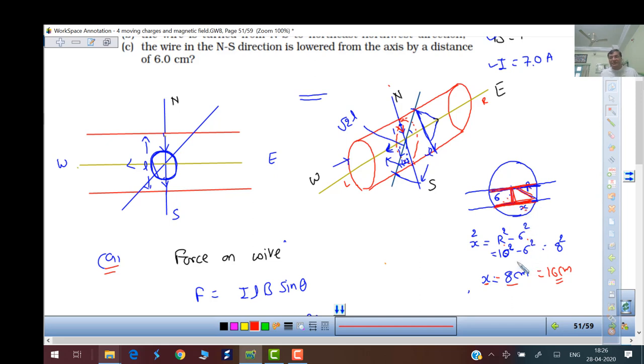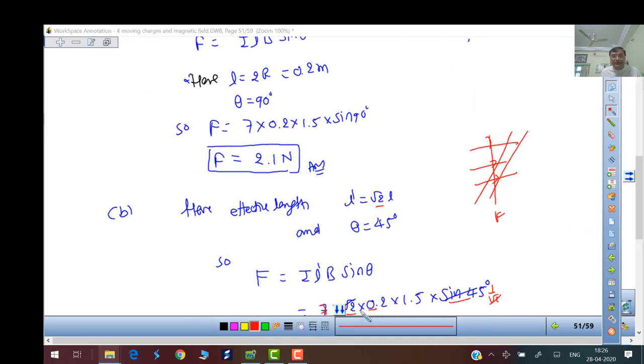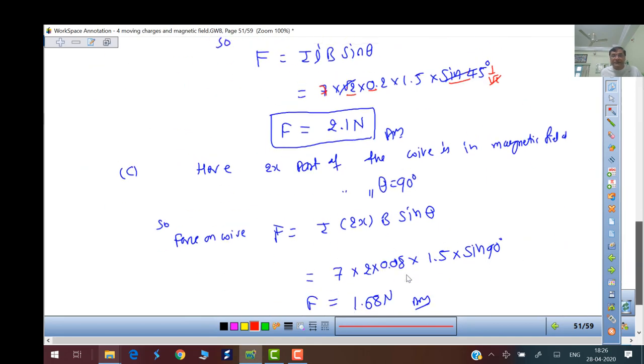Effective length is 2x. R squared minus 6 squared, in centimeters. 6 squared plus x squared equals r squared, so x equals root of r squared minus 6 squared. R is 10, so 10 squared minus 6 squared equals 8 centimeters. From here to here is 8 centimeters, so 8 plus 8 is 16. Effective length is now 16 centimeters. With angle 90 degrees, we get 1.68 Newton. This is a very good problem. Thank you.